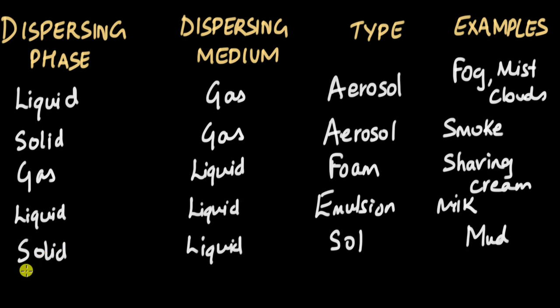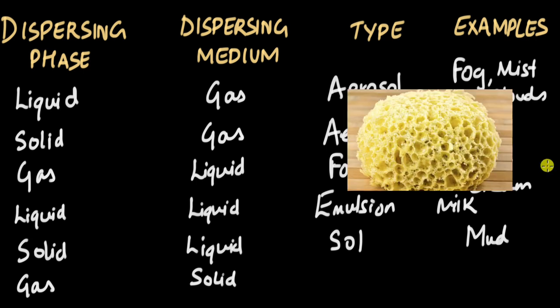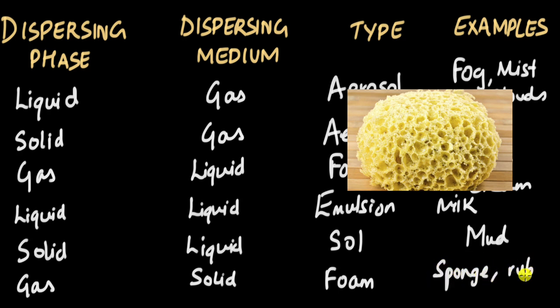Now let's take the dispersing phase as gas and the dispersing medium as solid. In this case, you can think about what you get: there can be many air spaces in between a solid. It turns out this is a sponge — you have these air spaces in between all the solid. This type is also called a foam, and examples include sponge and even rubber.